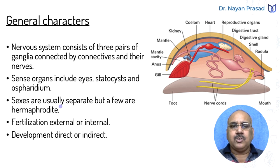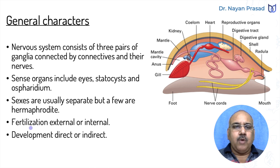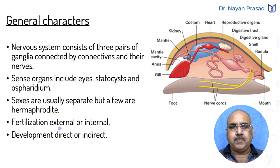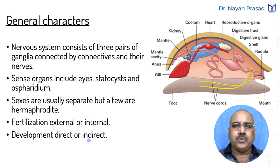Sexes are usually separate — they are dioecious — but a few are hermaphrodite also. Some bisexual members are present, which we shall see under classification. Fertilization is external or internal — in some members it takes place outside the body, while in others it takes place inside the body. Development is direct or indirect — direct when no larval stage is found, and indirect when a larval stage is present.